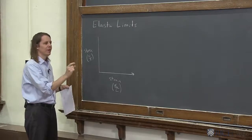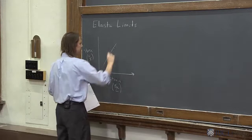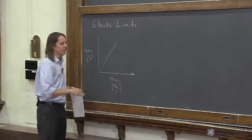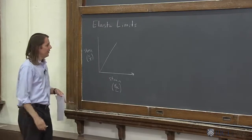But the fact that we gave you constant values for Young's modulus implies that this is a line. If you double the strain, you double the stress, or it takes twice as much stress to make twice as much strain, however you want to think about it.